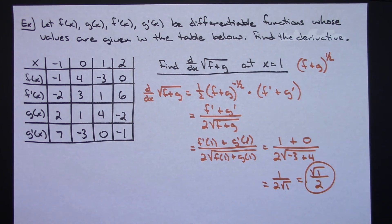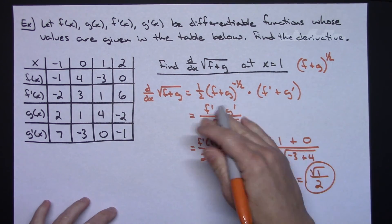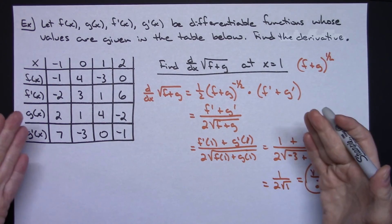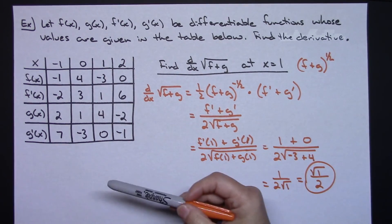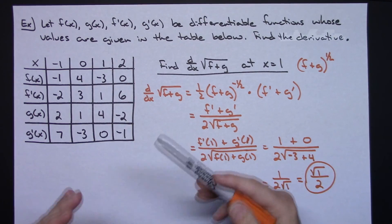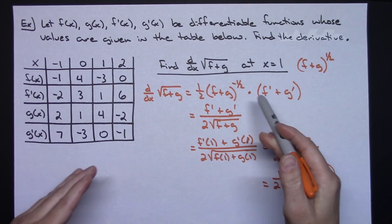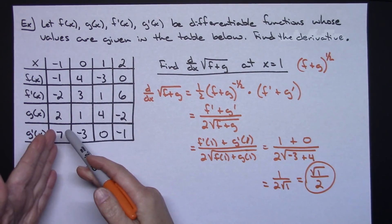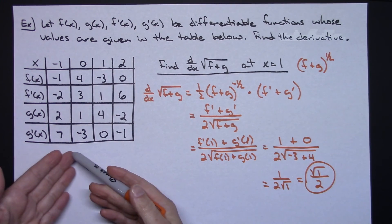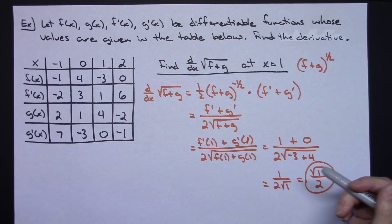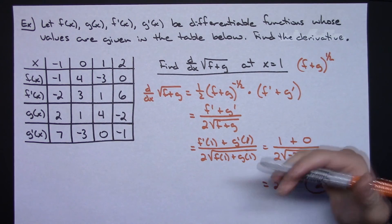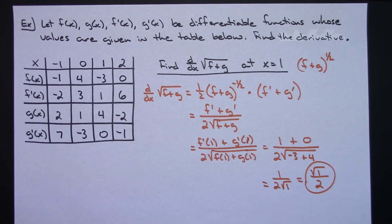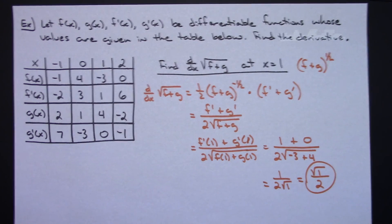So again, symbolic differentiation — they will not give you the functions. They're just wanting you to implement chain rule, product rule, and quotient rule on the basic functions, and then with the given values — either in a table or directly given to you as in that first example — you can actually calculate the derivative at a given point. Thanks for watching, and be sure to subscribe to the channel.